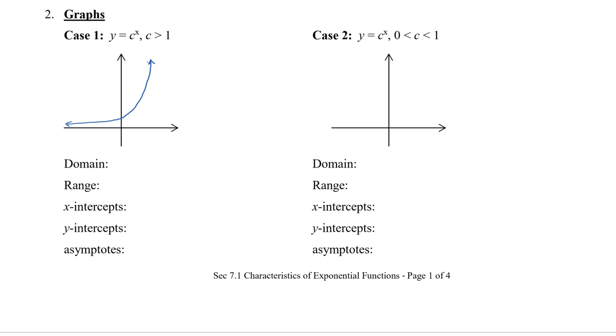So for this graph that looks like this, the domain is all real numbers. The range is going to be greater than 0, but notice that it doesn't equal 0 because it actually doesn't hit the x-axis. So therefore, there are no x-intercepts. There is one y-intercept of 0, 1, and then there's also an asymptote, which I'll draw in here, which is right over here. And that asymptote is y equals 0.